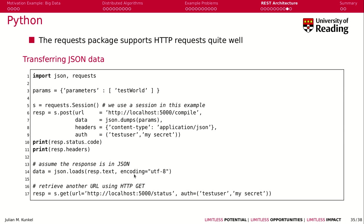In Python, we can use the requests module. For example, compose a header where we say we want to submit an application/JSON document as a request, then submit data — here a dictionary — and convert it into the data section. This already mimics a remote function or remote method invocation. Once you have posted the message, you can check the replies from the server, and if the reply is JSON, you can load it and process it.